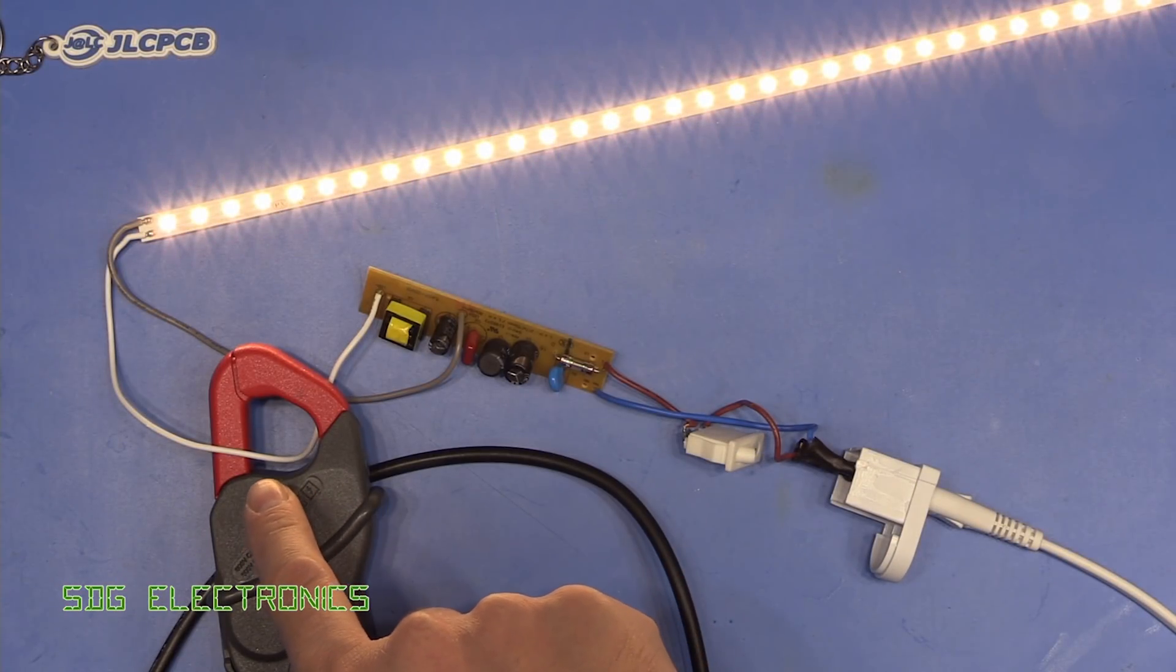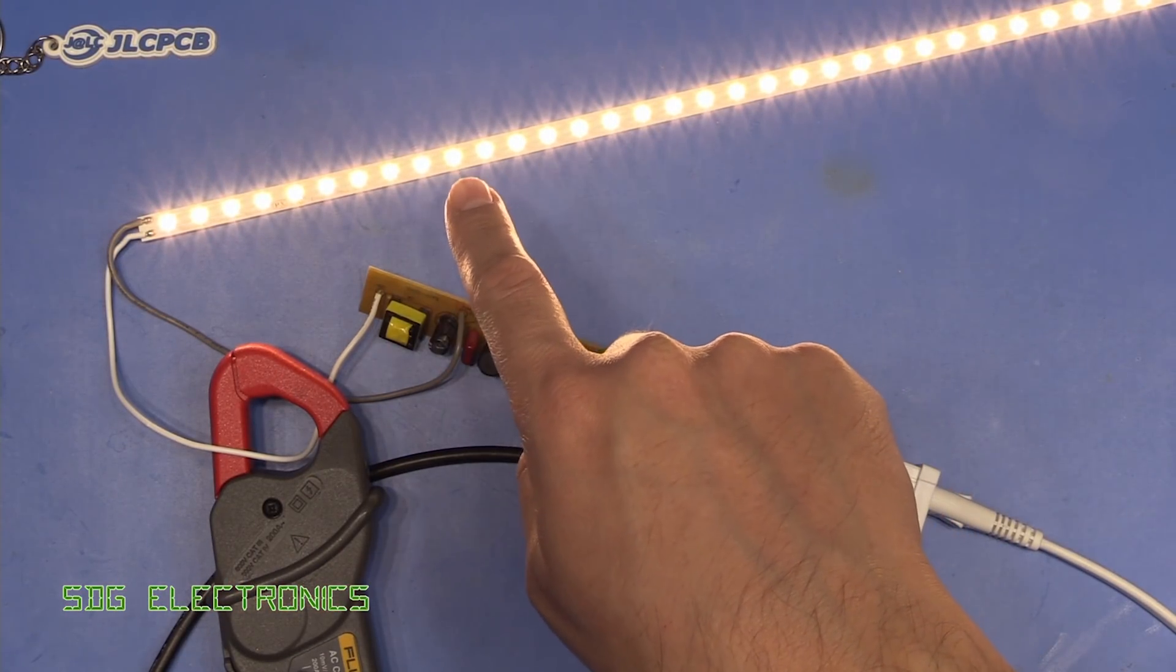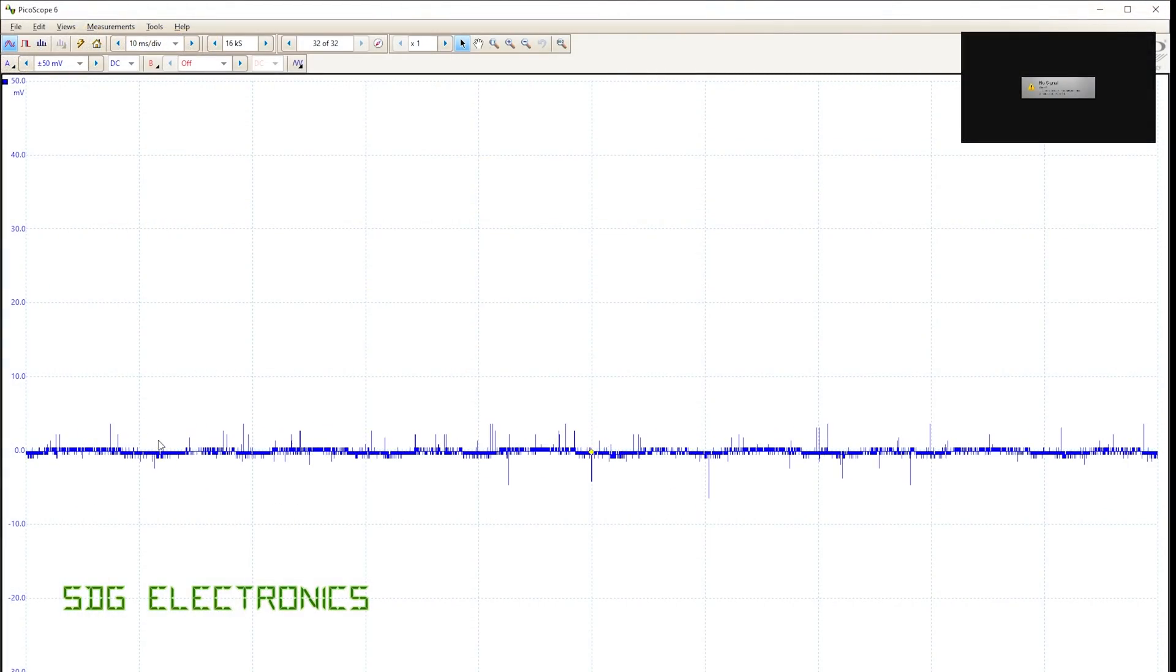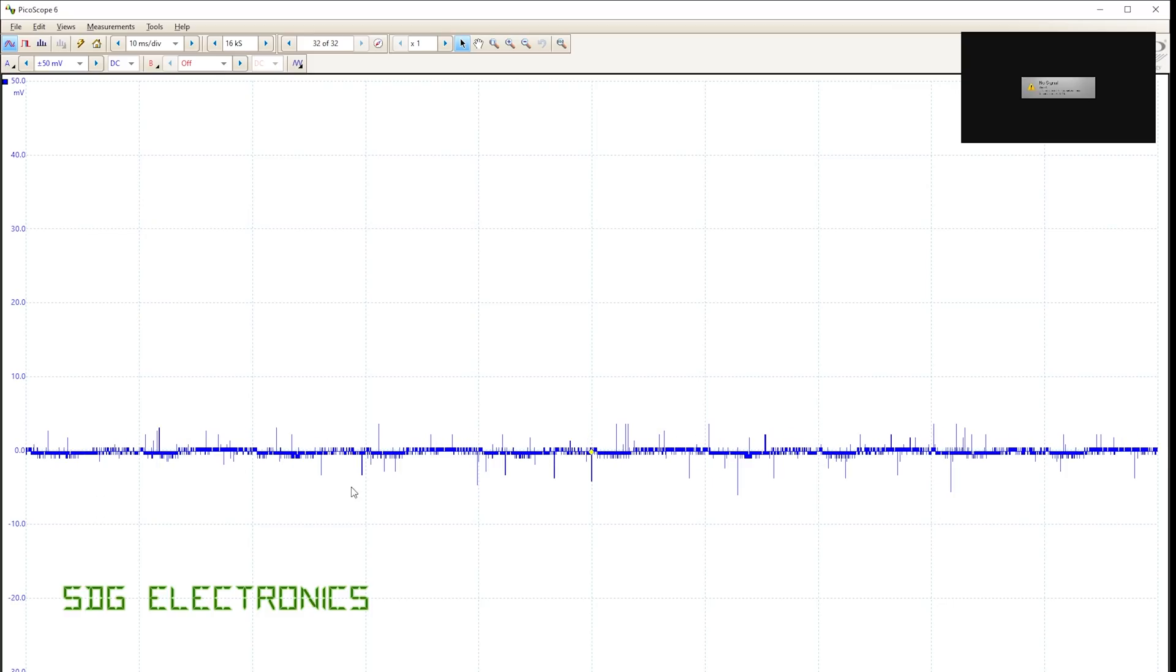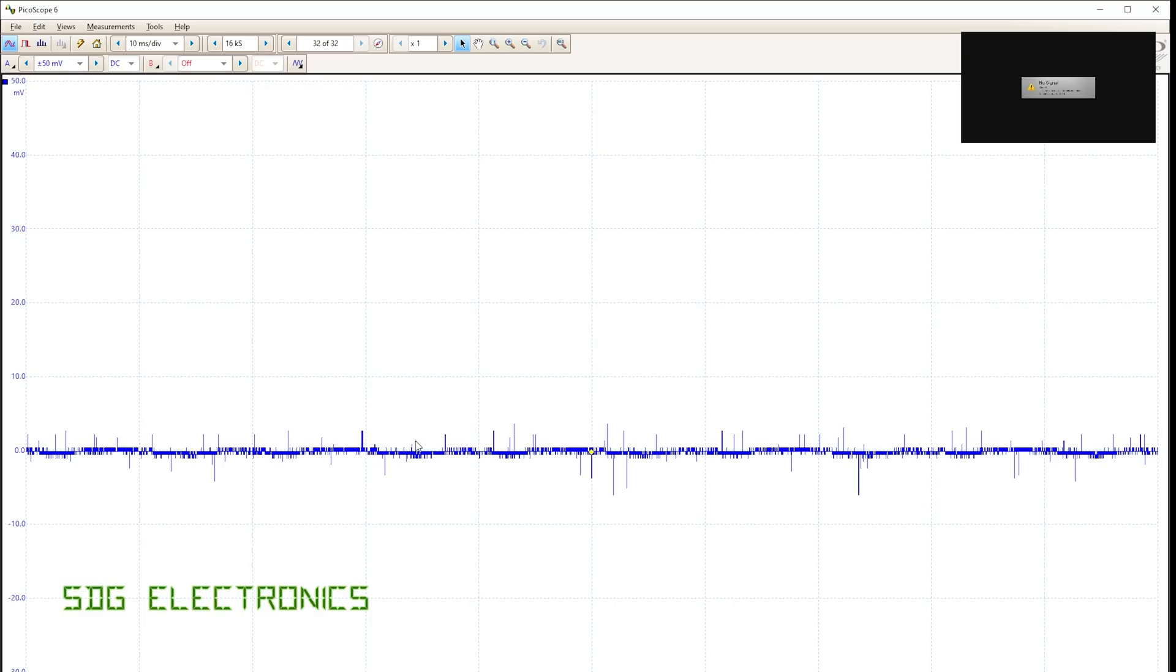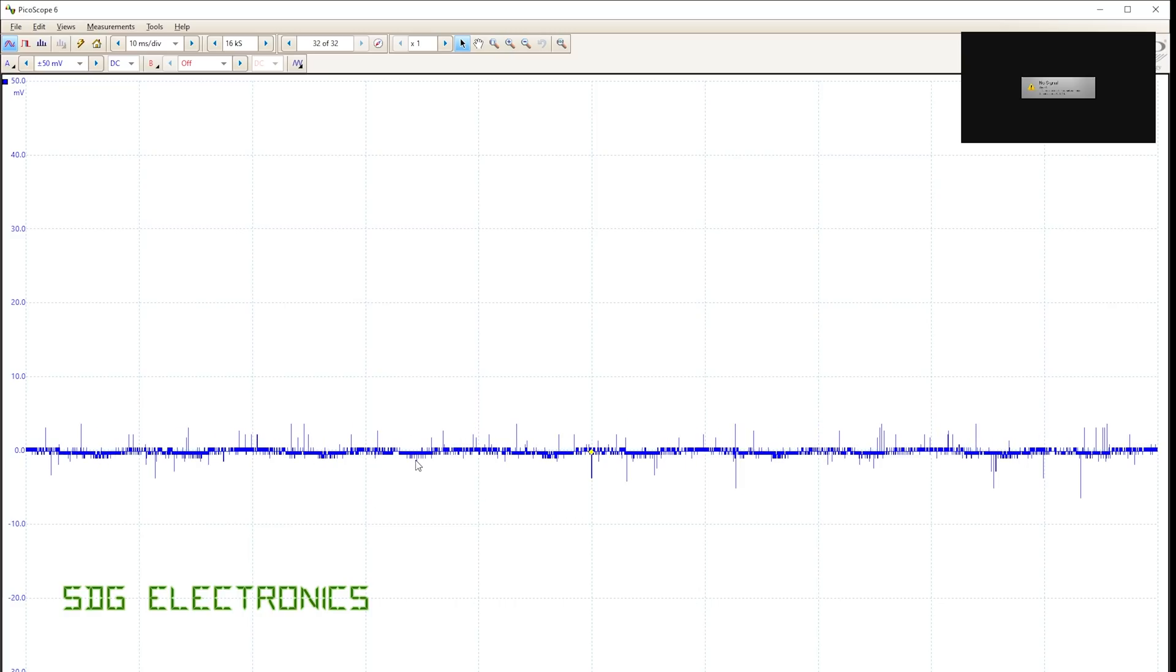So I've just put a current clamp on one of the leads to the LEDs. And if we look at the waveform, we're not getting a huge amount of noise here. We're not seeing too much ripple. So that capacitor across the LEDs is doing a fairly good job of eliminating some of the ripple on these LEDs. So first of all, let's simulate a failure of that capacitor by just removing it from the PCB.